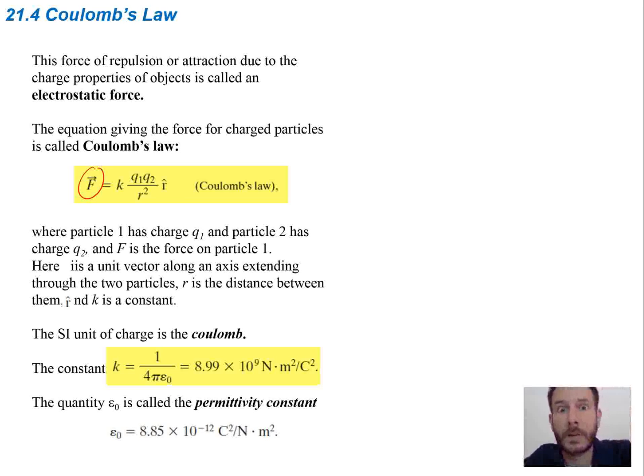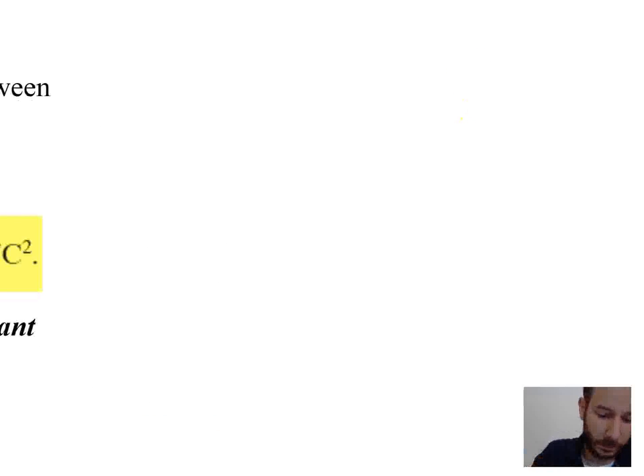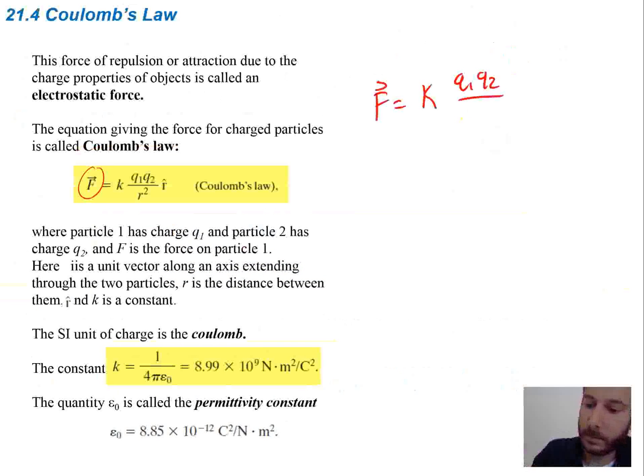Now the equation for electrostatic force is given by Coulomb's law. So force is equal to k q1 q2 over r squared, and we have the unit vector r at the end. So what are each of these things? Well k is going to be a constant. If you look down here, you can see the k is equal to 8.99 times 10 to the 9th newton times meter squared over coulomb squared. That also breaks down to this 1 over 4 pi times the permittivity constant, which is given here.